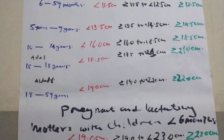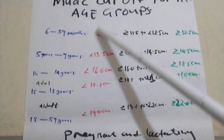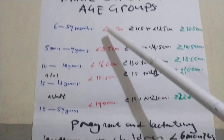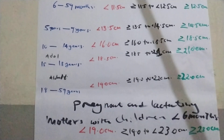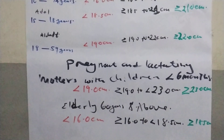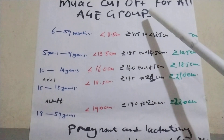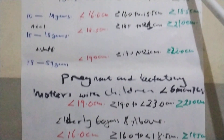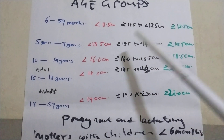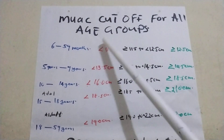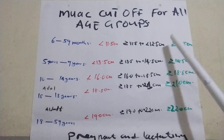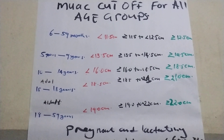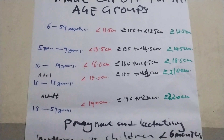Regarding the color-coded MUAC tape: the red color indicates severe acute malnutrition, the black color indicates moderate acute malnutrition, and the green color indicates normal. That is all. Thank you for watching and thank you for your time.